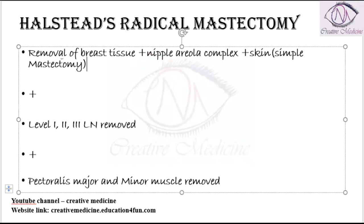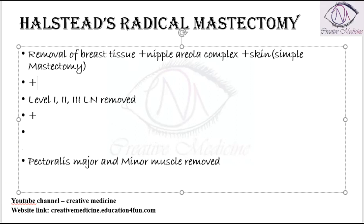In Halstead Radical Mastectomy, we remove the whole breast tissue, nipple areolar complex, and skin, along with level 1, level 2, and level 3 lymph nodes. We also remove the pectoralis major muscle and pectoralis minor muscle, along with subcutaneous fat and deep fascia.